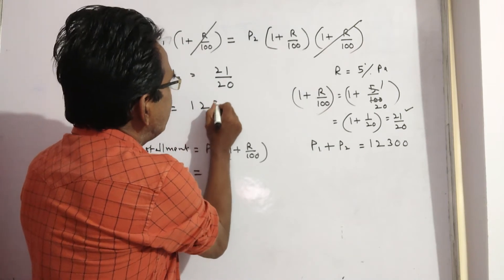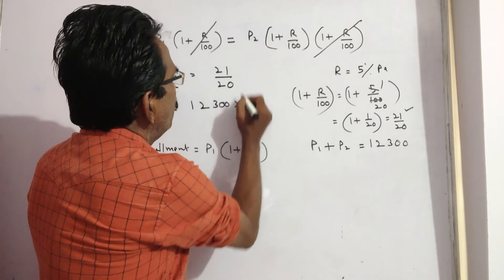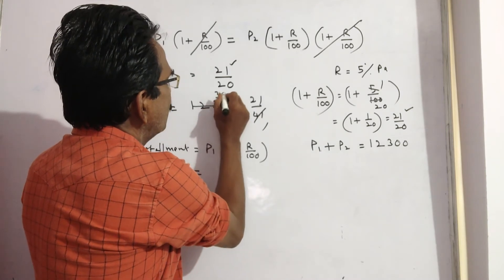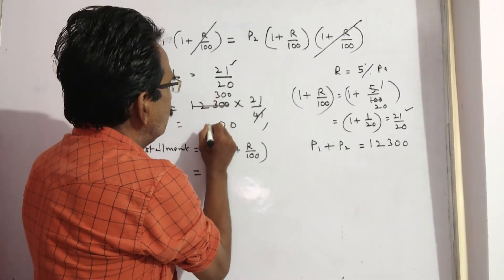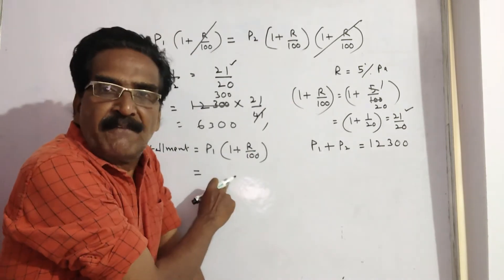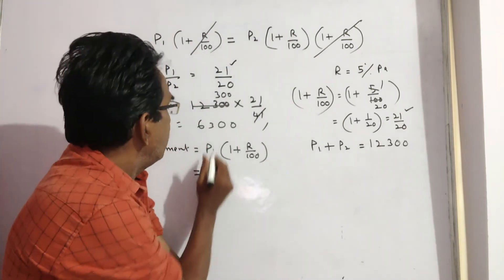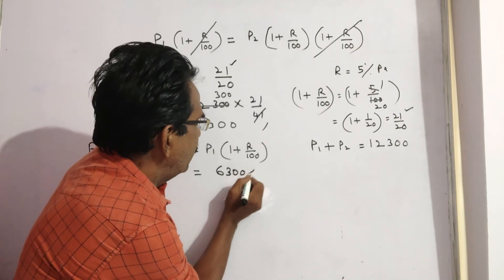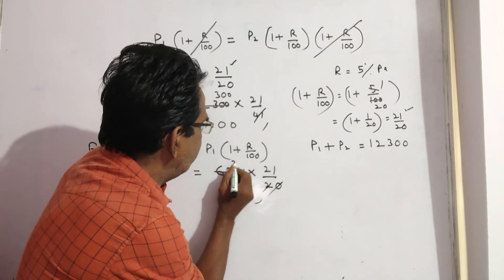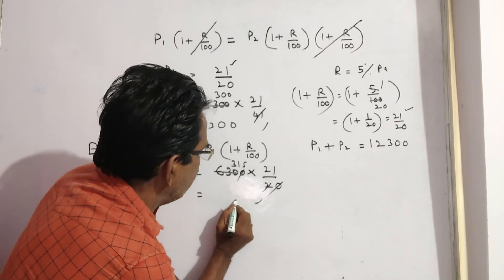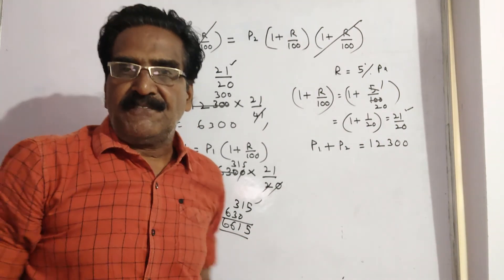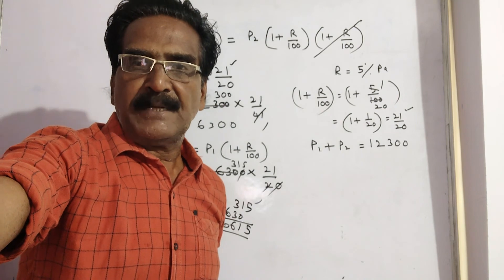P1 equals 12,300 into 21 divided by (21 plus 20), that is 12,300 into 21/41, which gives P1 equals 6,300. Now each installment equals P1 into (1 + r/100), which is 6,300 into 21/20. The zeros cancel and we get 6,615. So each installment is rupees 6,615. Thank you friends.